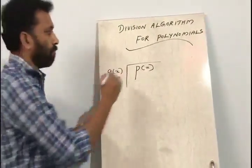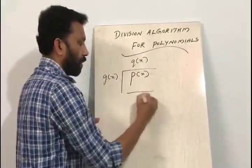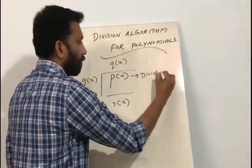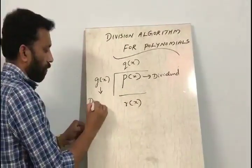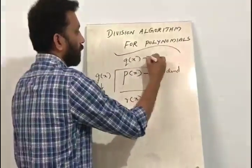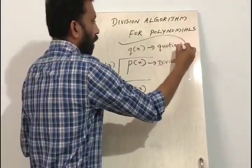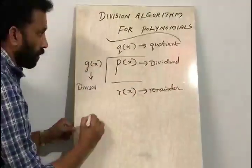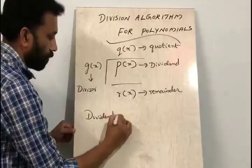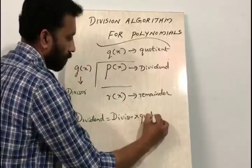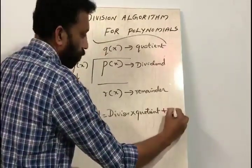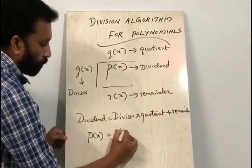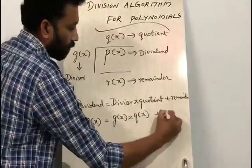When we divide p of x by g of x, we will get one quotient that is q of x, and we will get one remainder that is r of x. Here p of x is the dividend, g of x is the divisor, q of x is the quotient, and r of x is the remainder. We know that dividend is equal to divisor into quotient plus remainder — that is, p of x is equal to g of x into q of x plus r of x.